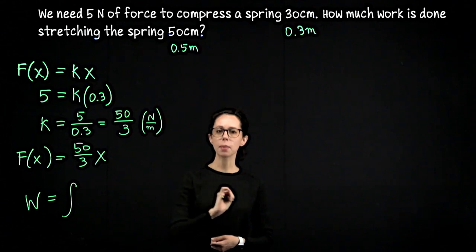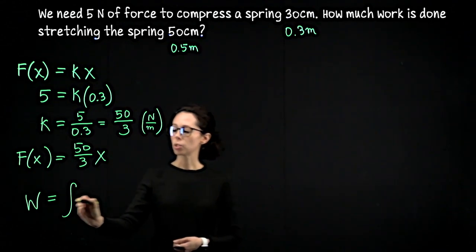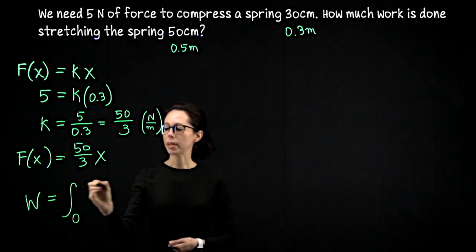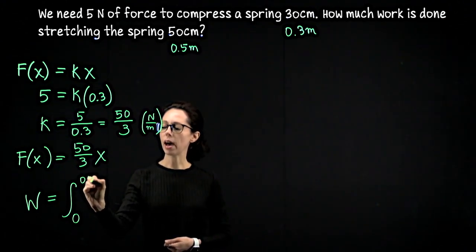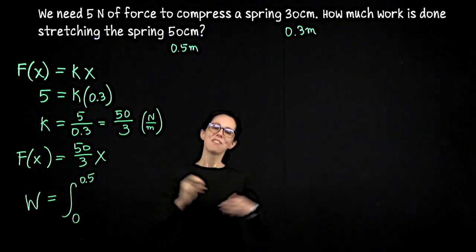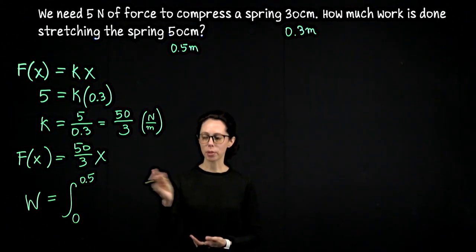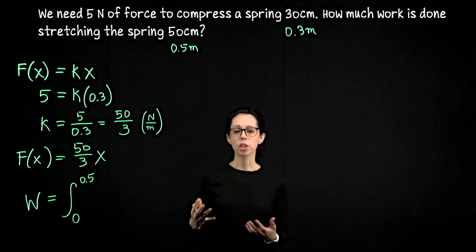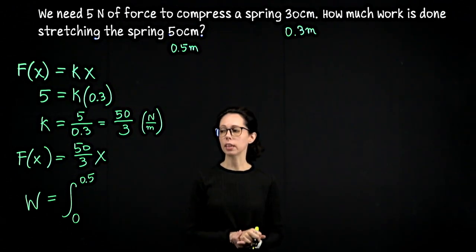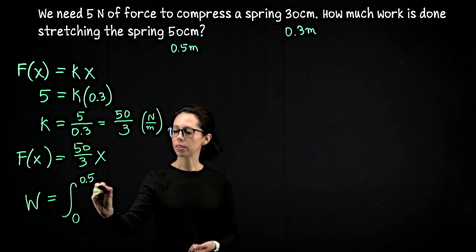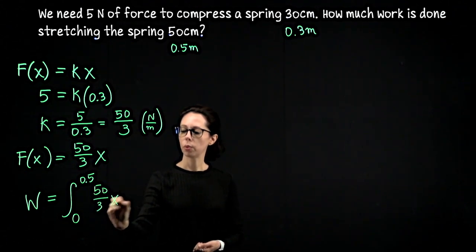My lower bound is going to be 0 starting at equilibrium, and my top bound is going to be 0.5 because we want to take our spring and stretch it 50 centimeters beyond equilibrium or 0.5 meters. Then in a varying force situation, the work is the integral of the function used to model the force. So we're going to integrate 50 thirds x with respect to x.